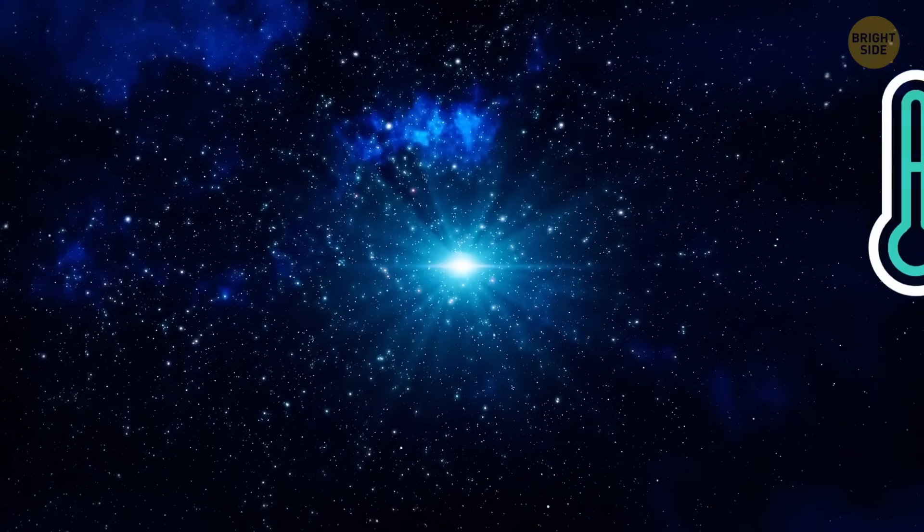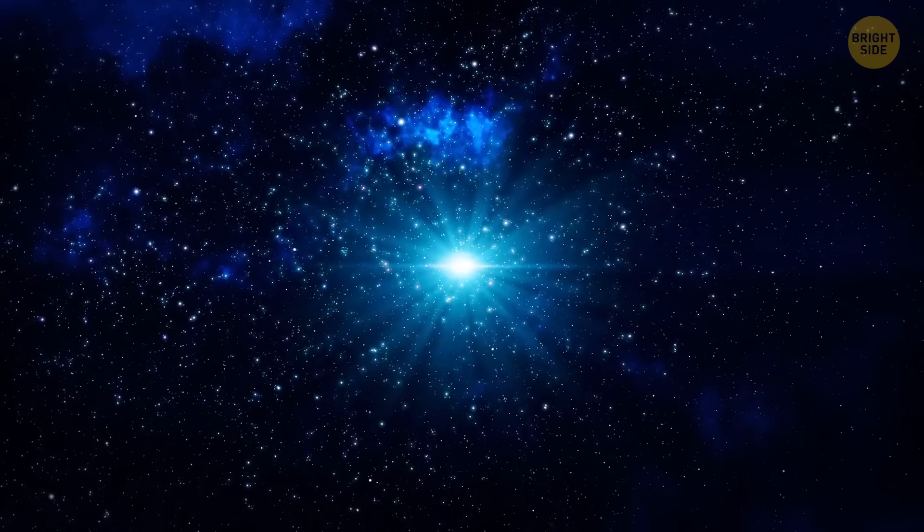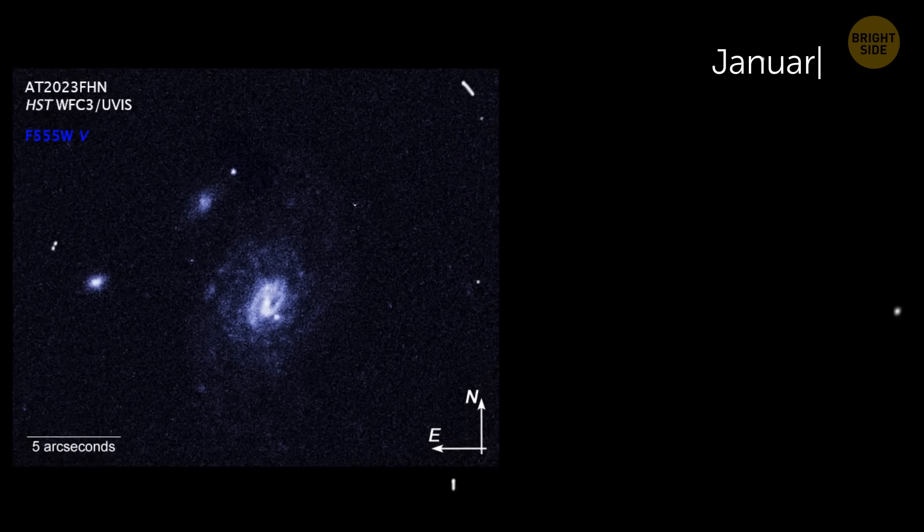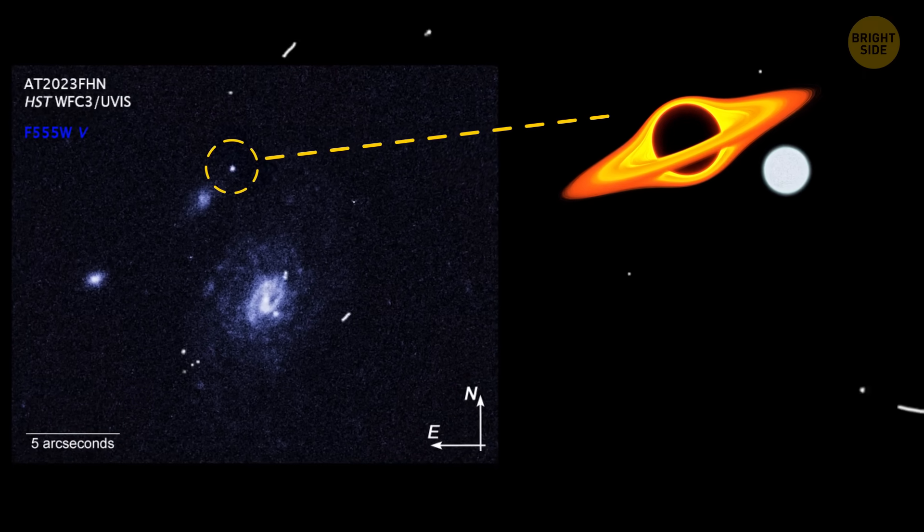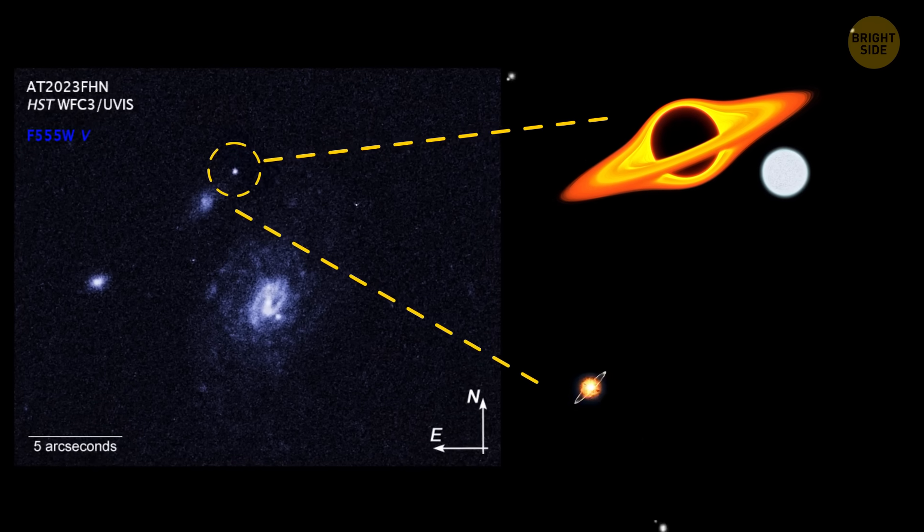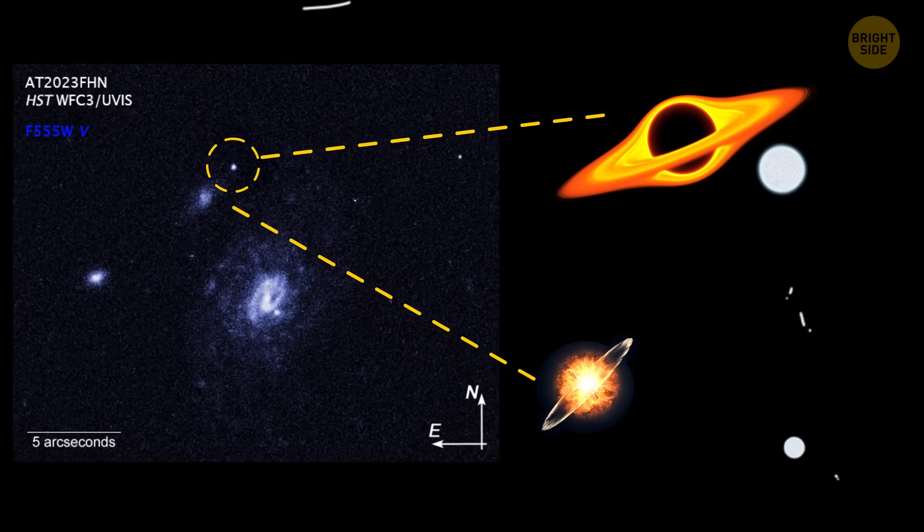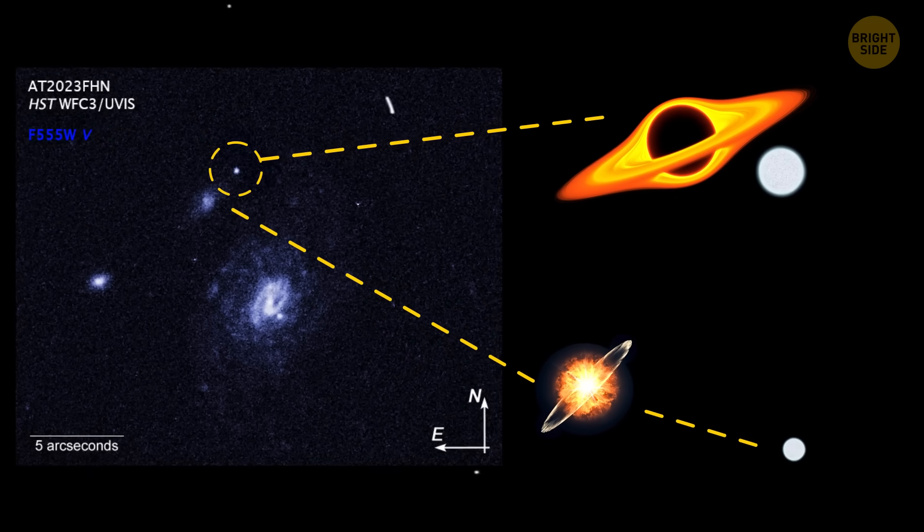Since these explosions happen so quickly, it's tough to figure out what causes them. In January 2019, astronomers narrowed it down to two causes: a black hole consuming a white dwarf star, or a rare kind of supernova that leads to the formation of a neutron star or a black hole.